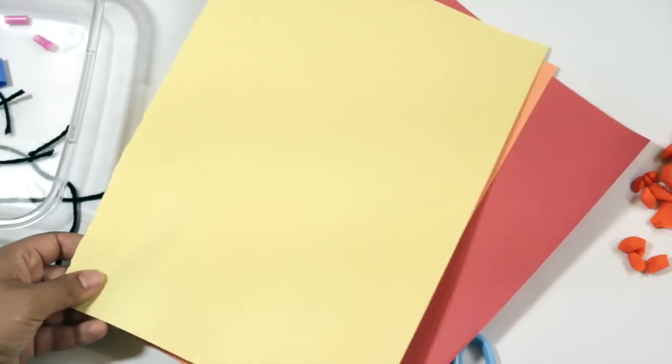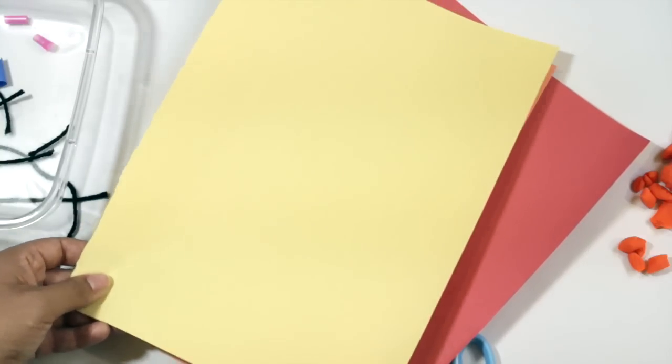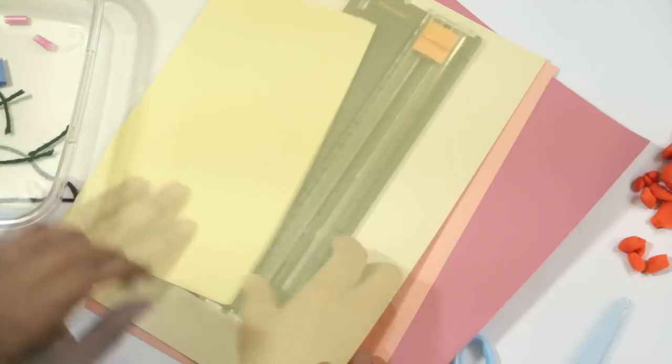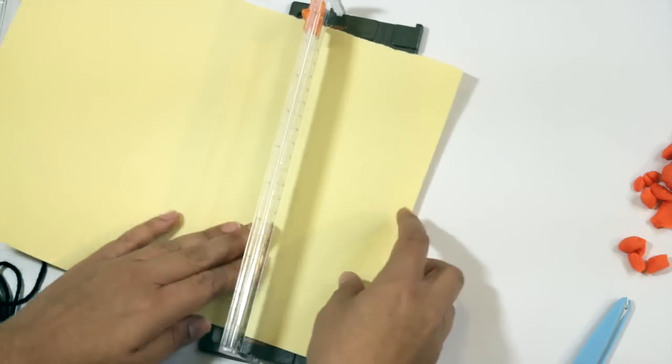And the reason once again the same as the straws the stronger the paper the thicker the paper the less likely it will be to be flimsy and to move around on your child. For the first one I'm gonna cut some strips.